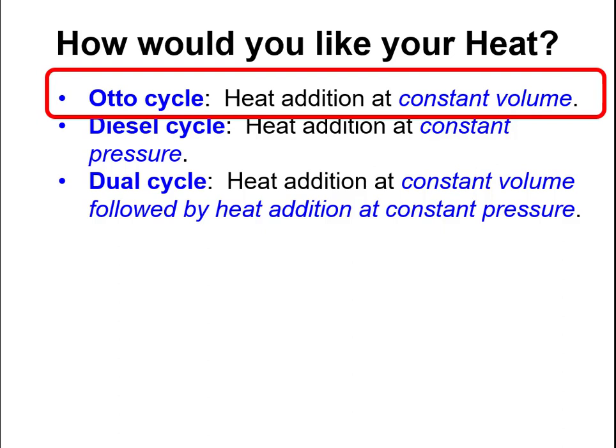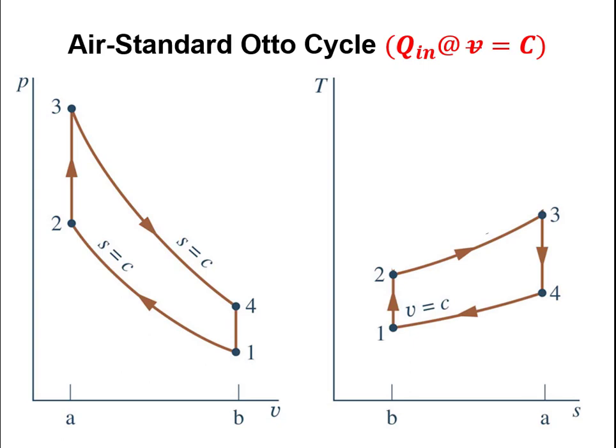What differentiates Otto cycles and Diesel cycles is the assumption made when adding heat. In an Otto cycle analysis, we assume heat is added at constant volume. Otto cycle charts include both PV and TS diagrams. The compression stroke moves from state 1 to state 2 — imagine a piston moving up so the volume inside the cylinder shrinks and pressure increases. Next, heat is added, perhaps via a spark plug and ignition, though we assume it's simply heat transferred in.